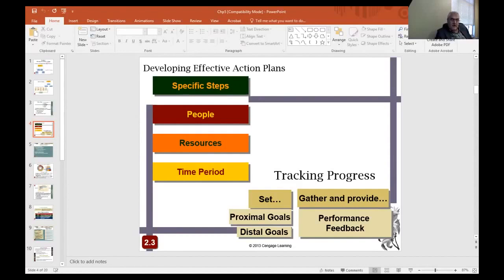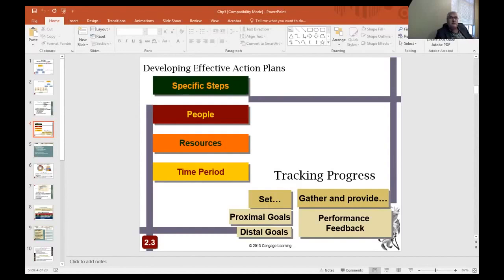The last step in developing an effective plan is to maintain flexibility. One method of maintaining flexibility while planning is to adopt an options-based approach. The goal of options-based planning is to keep options open by making small, simultaneous investments in many options or plans. Option-based planning is the opposite of traditional planning. The purpose of an action plan is to commit people and resources to a particular course of action. However, the purpose of options-based planning is to leave those commitments open. Holding options open gives you choices and choices give you flexibility.